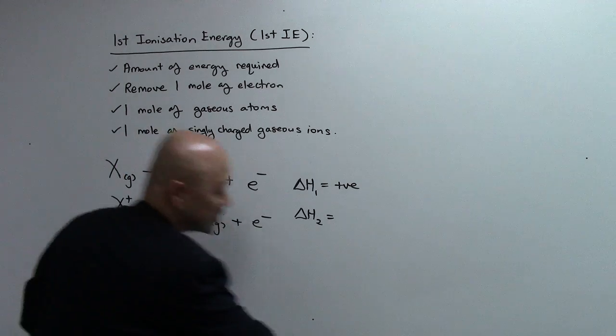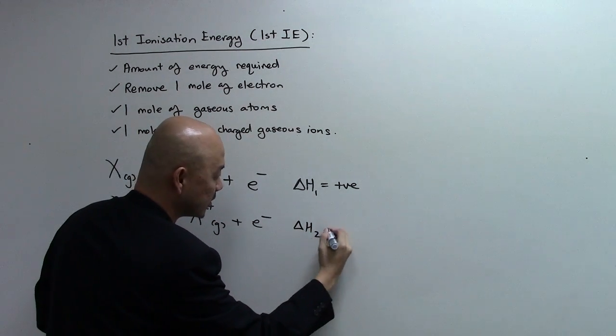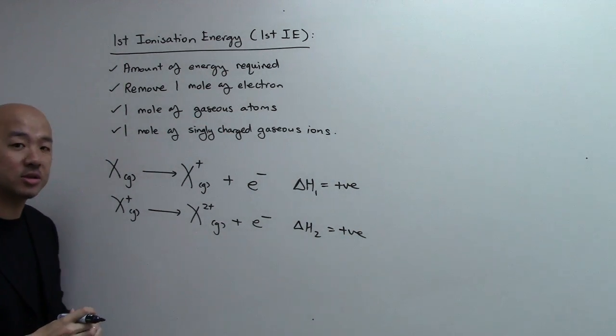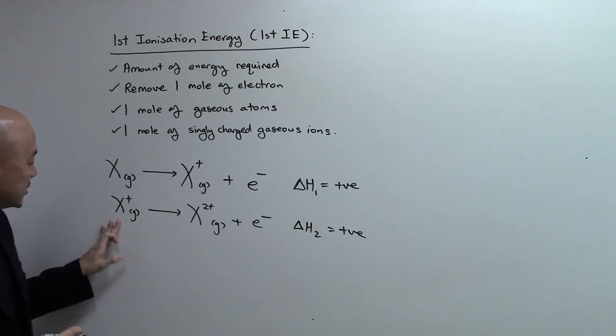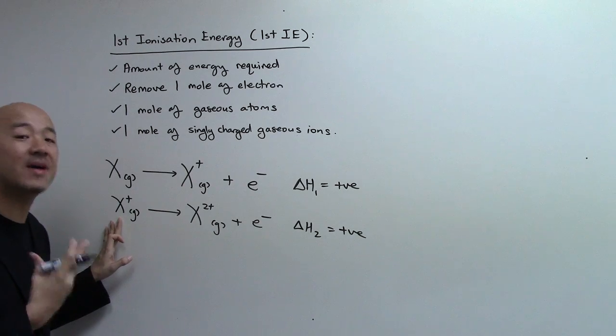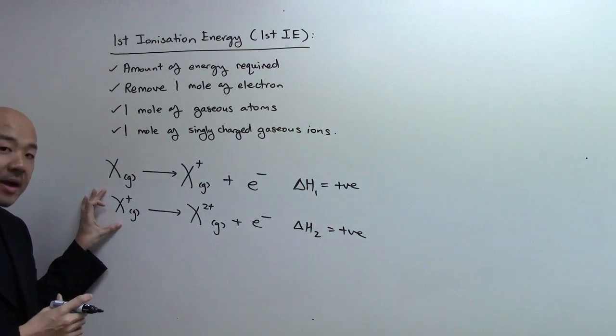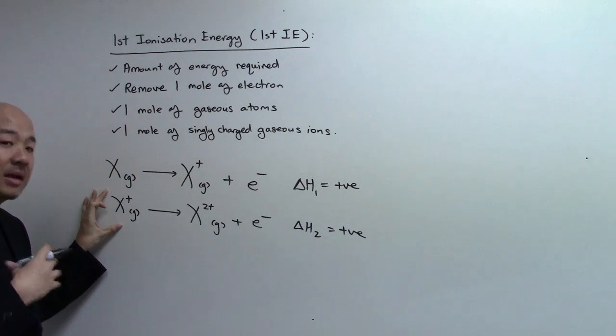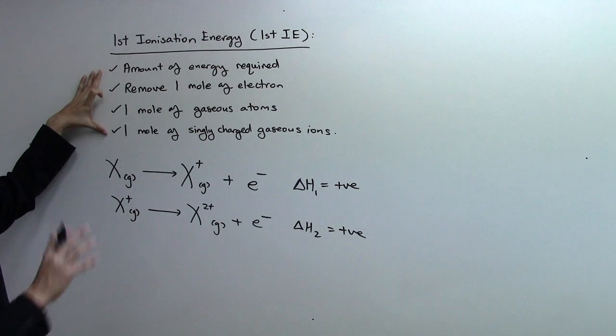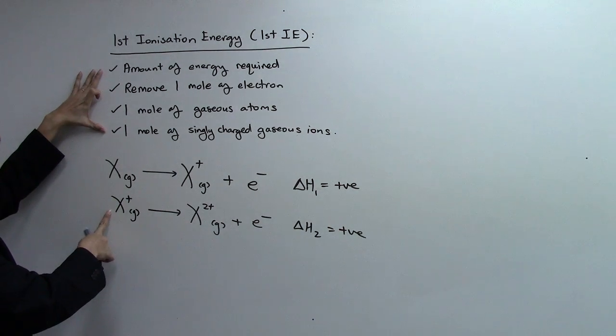So, ΔH will then be positive also, because when you remove electrons, you need energy, so energy is absorbed. Now, if we ask you to define second IE and write an equation, this will be the equation I'm going to write, and then in English, it will be something like this, but we're going to change some of the words. Take a look over here, second IE.